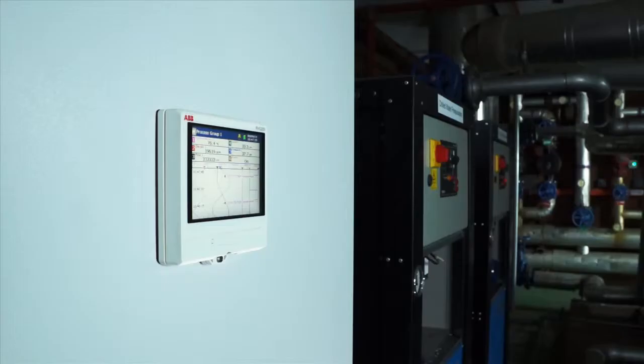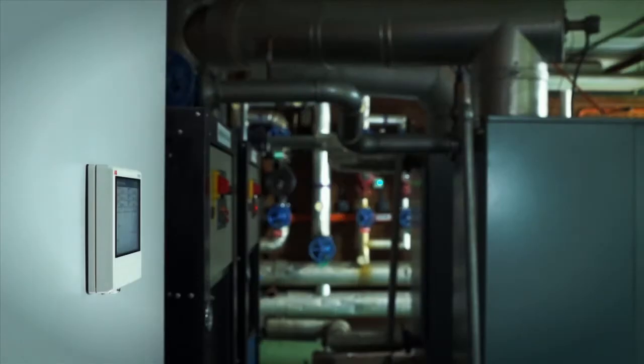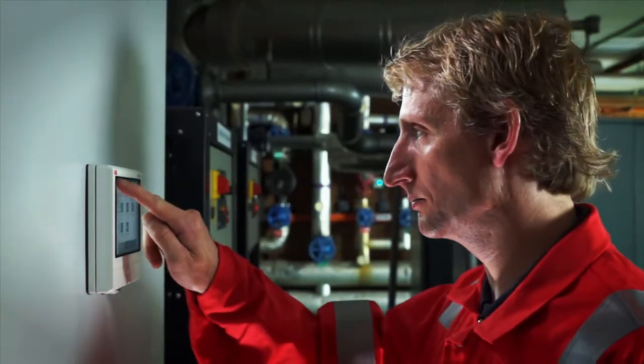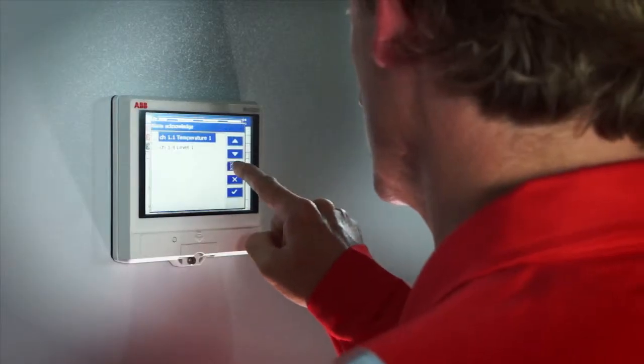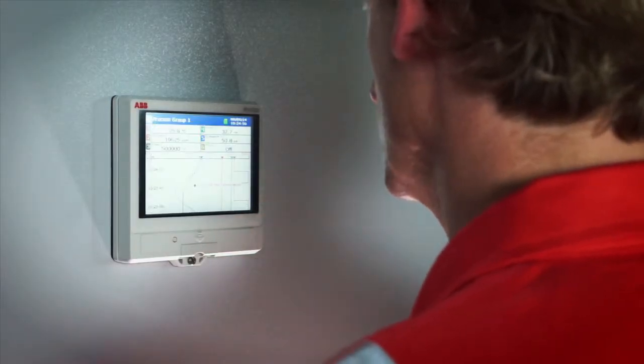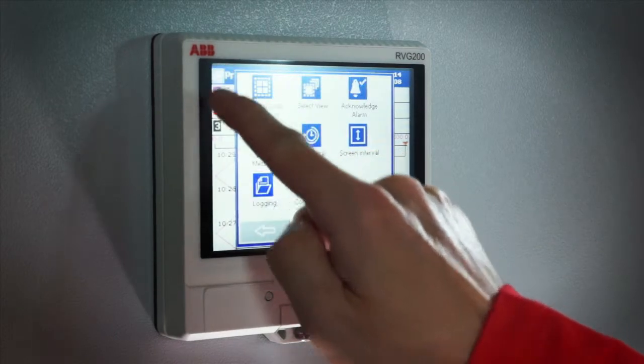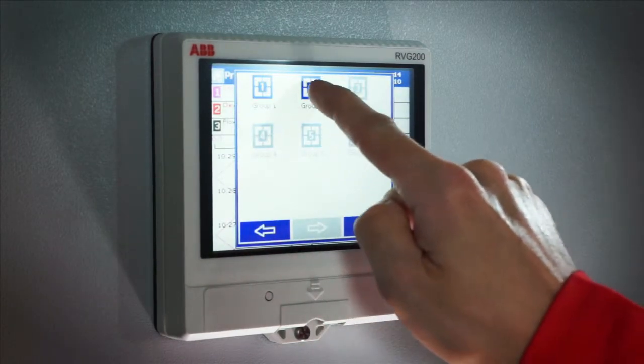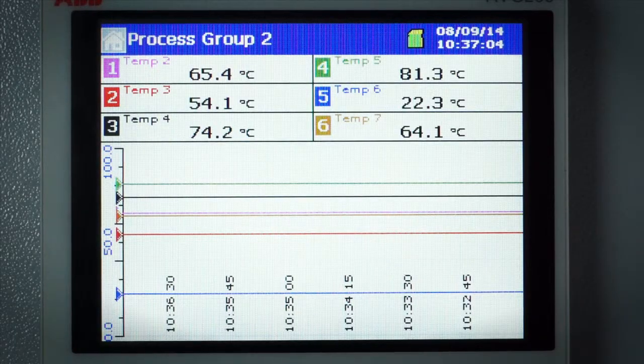The RVG200's intuitive touchscreen and new icon-based user interface means operating a paperless recorder has never been easier. The ability to create up to six process groups gives you the option of grouping signals from one process by type or monitoring up to six separate processes.